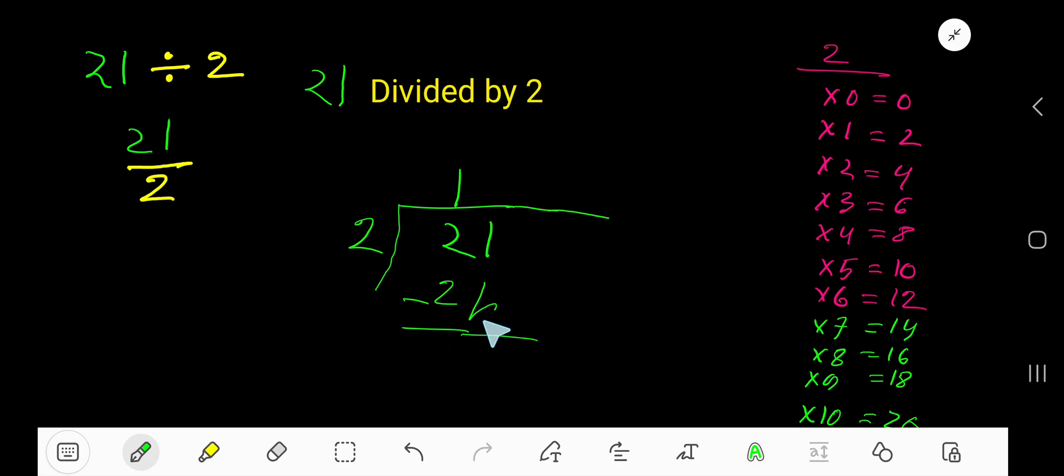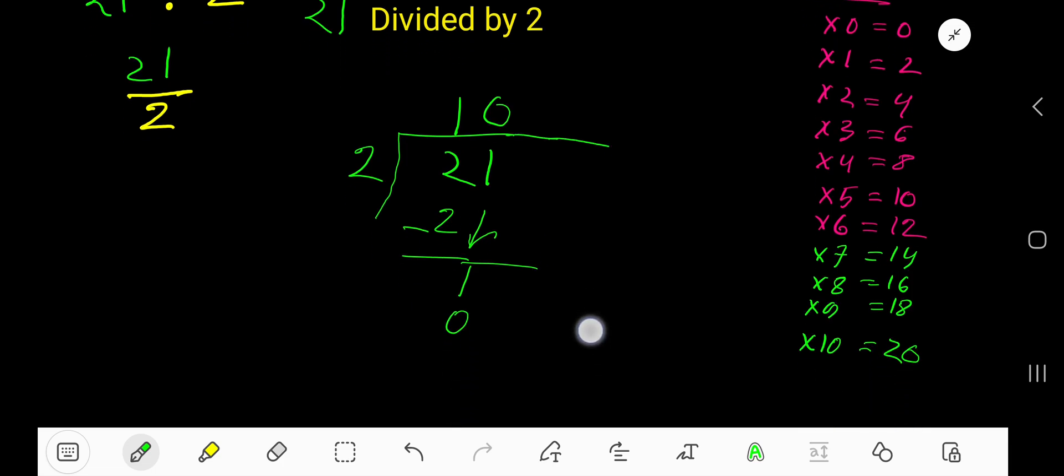Bring down this 1. 2 goes into 1 how many times? Since less than 1, so 0. 0 times 2. 0 times 2 is 0. If you subtract, then you are getting 1.